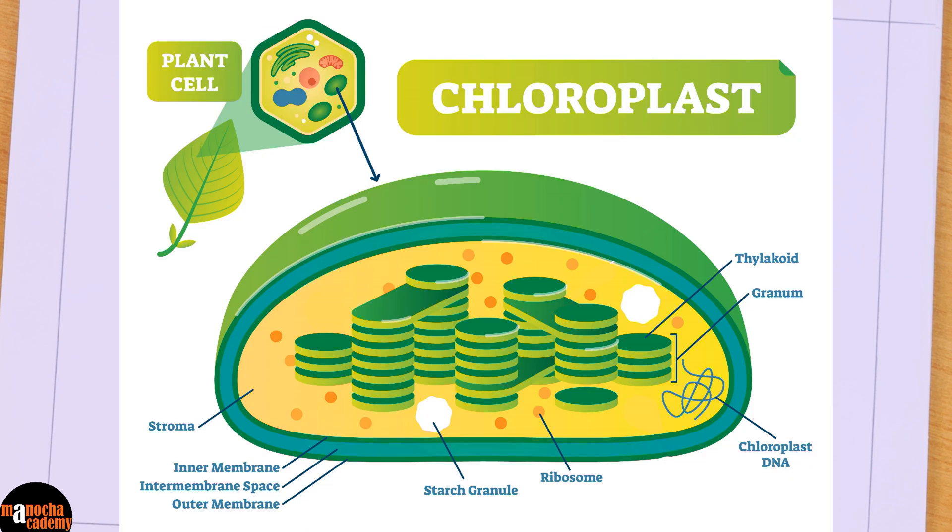Today we are going to draw the diagram of a chloroplast. Chloroplast is a granular cell organelle found in plant cells and we will see how we can draw the diagram of chloroplast very easily.